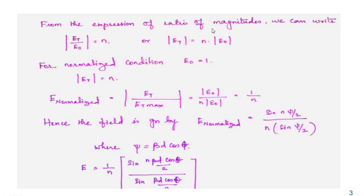From the expression of ratio of magnitudes, we can write E_t divided by E_naught equals n — this was already derived in the total field component of n elements. Where E_t equals n times E_naught, and for normalization, the condition for getting maximum power sets E_naught equal to 1, so E_t equals n and |E_t| equals n. The normalized field is E_normalized = E_t / E_t_max = 1/n.